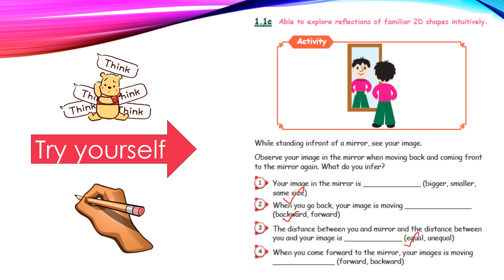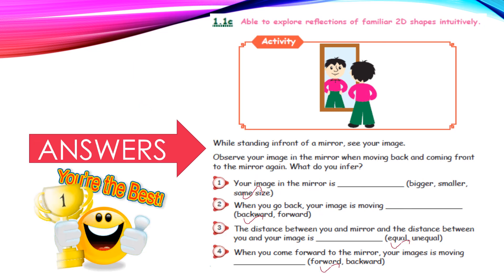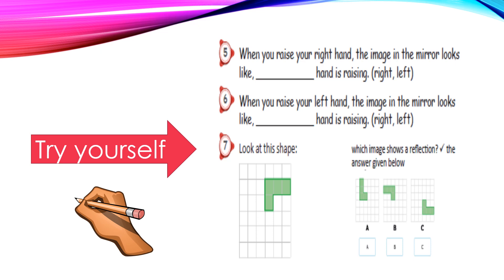When you come forward to the mirror, your image is moving. So if you move forward, you will move forward. The answer is forward. So while asking the question itself, you guessed the answer. You are the best. When you raise your right hand, the image in the mirror looks like the left hand is raising. That is the answer. So the answer is left hand only. When you raise your left hand, the image in the mirror looks like the right hand is raising. So the answer is right. Yes, you are right.